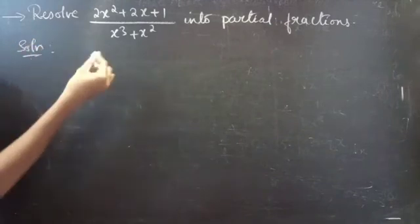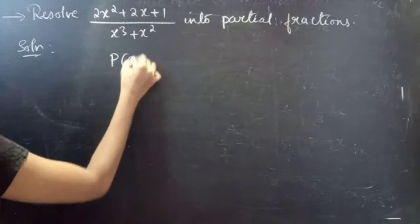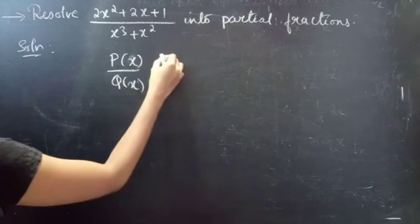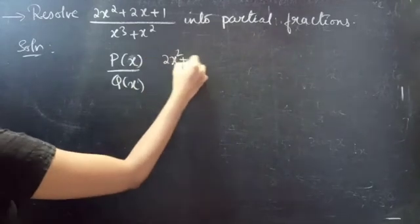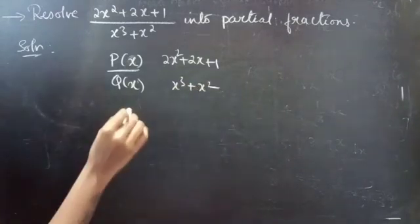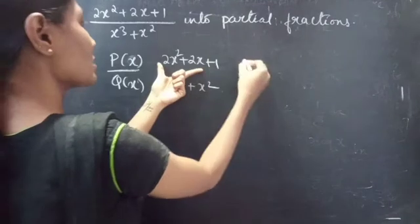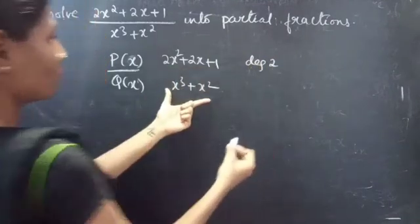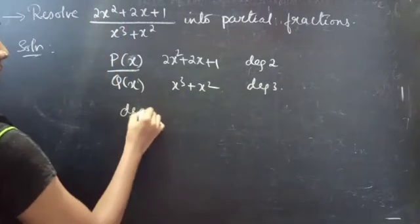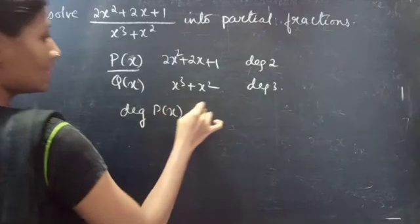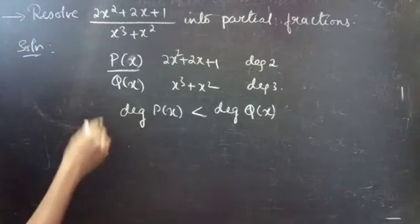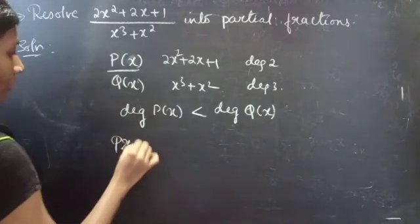Solution. Let us consider the given fraction as p(x) by q(x), where p(x) equals 2x squared plus 2x plus 1 and q(x) equals x cubed plus x squared. Here it is clear that the degree of p(x) is 2 and the degree of q(x) is 3. Since the degree of p(x) is less than the degree of q(x), the given fraction is a proper fraction.